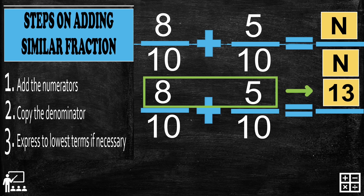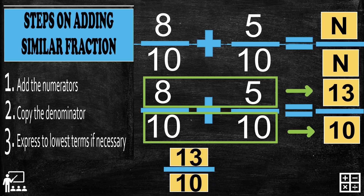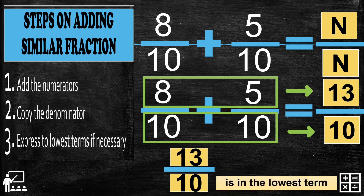Step 2: copy the denominator. The denominator of the two fractions is 10, so we just copy the denominator. Step 3: express to lowest terms if necessary. But 13 over 10 is already in lowest terms, so we don't need to reduce the fraction.